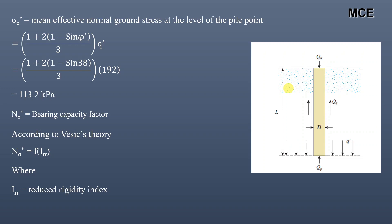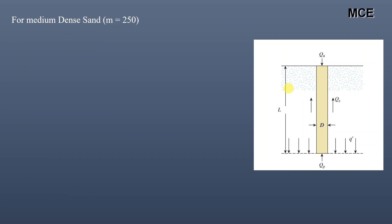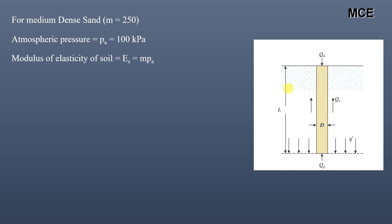For medium dense sand, m = 250. Atmospheric pressure p_a is assumed as 100 kPa. The modulus of elasticity of soil is E_s = m × p_a = 250 × 100 = 25,000 kPa.